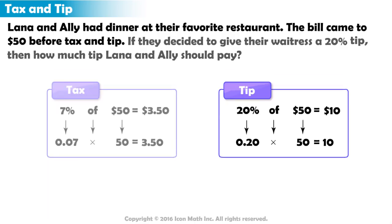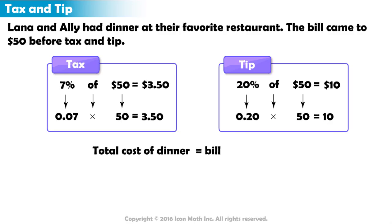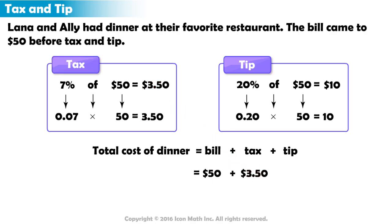Finally, to calculate how much Lana and Allie will pay for their meal after tax and tip, we must add their bill, the tax, and tip together. Their meal was $50, plus tax $3.50, plus tip $10, makes the total cost of their dinner $63.50.